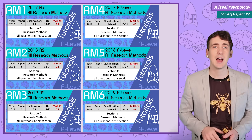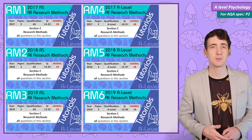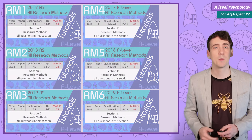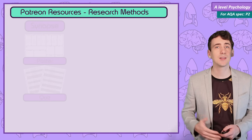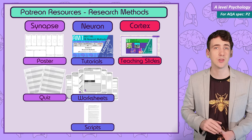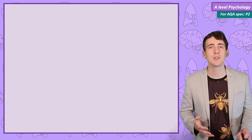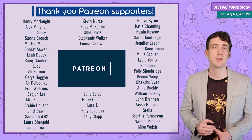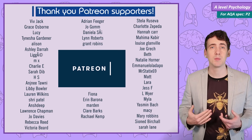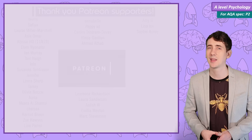So that was self-report techniques. There are tutorial videos covering the AS and A-level research methods sections with worked examples and exam tips. Patrons at the Neuron level and above can access these, as well as many more hours of exam tutorial videos and over 100 printable resources from across the A-level over on psychboost.com. Thanks to all the students and teachers who have supported psychboost on Patreon — their support allows me to teach part-time so I can make psychboost on YouTube for everyone. See you in the next research methods video: case studies.